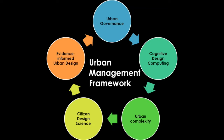Urban governance refers to how government and stakeholders decide how to plan, finance and manage urban areas. In cognitive design computing, the aim is to develop and implement a computational design for integrated urban design and adaptive digital master planning. Urban complexity is defined in terms of urban perception, based on the concept of maximum rate of usable information. Citizen design science is a combination of both concepts for urban systems — it adds human observation, cognition, experience and local knowledge into a scientific framework that improves planning, design, managing and transformation of buildings. Evidence-informed urban design supports making urban public spaces used and appreciated, informed by the people.